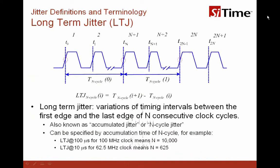Now let's move on to the long-term jitter. The long-term jitter is the variation of the timing intervals between the first edge and the last edge of n consecutive clock cycles. This is also known as accumulated jitter or n-cycle jitter. Sometimes long-term jitter is specified by the accumulation time of n cycles. For example, a long-term jitter of 100 microseconds for a 100 MHz clock means n equals 10,000 clock cycles. For a 62.5 MHz clock, a long-term jitter accumulation time of 10 microseconds means n equals 625 clock cycles.